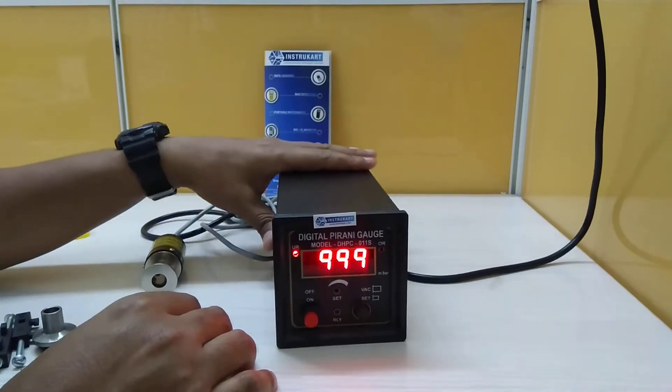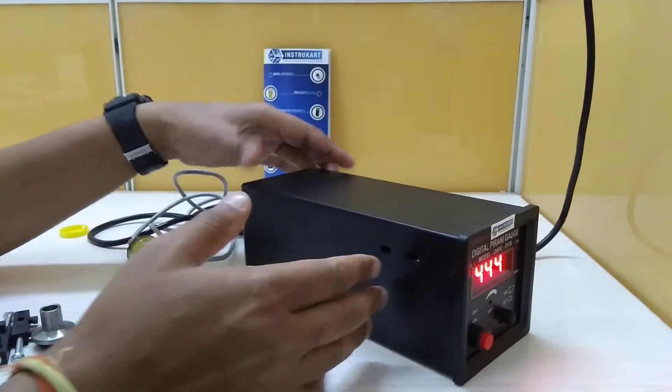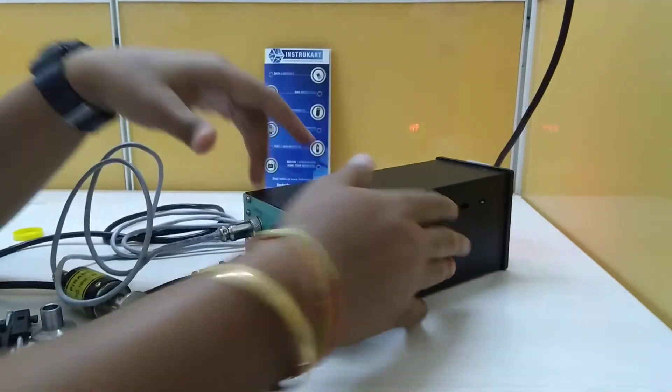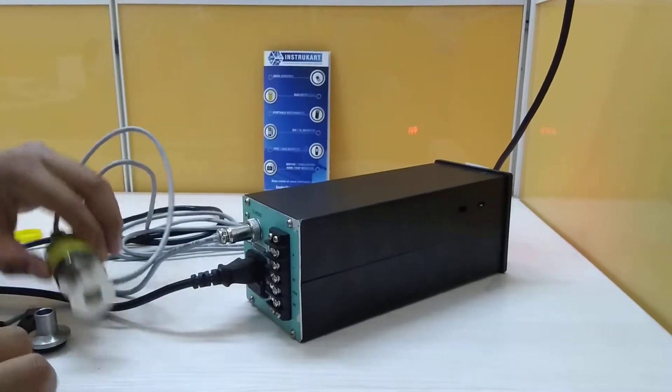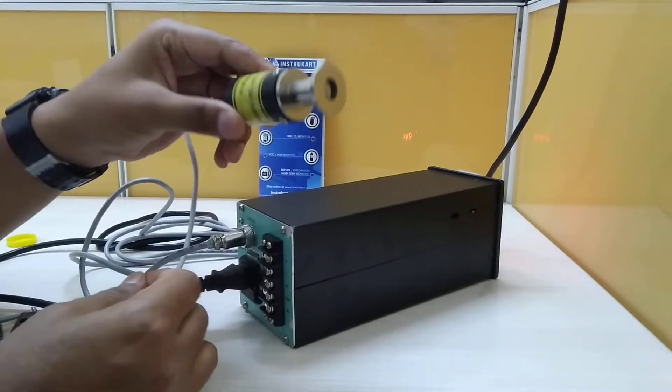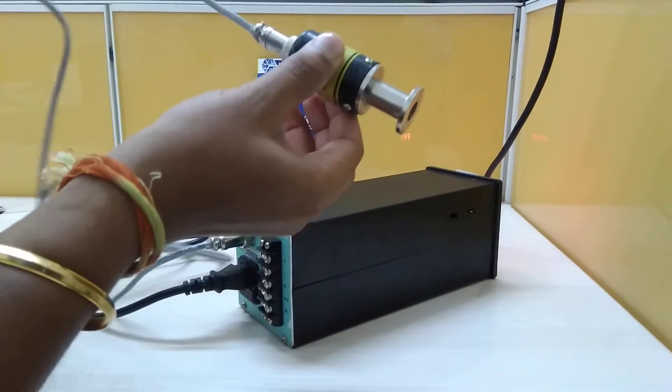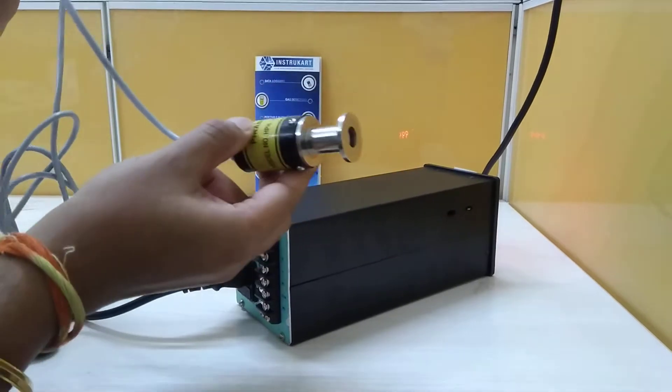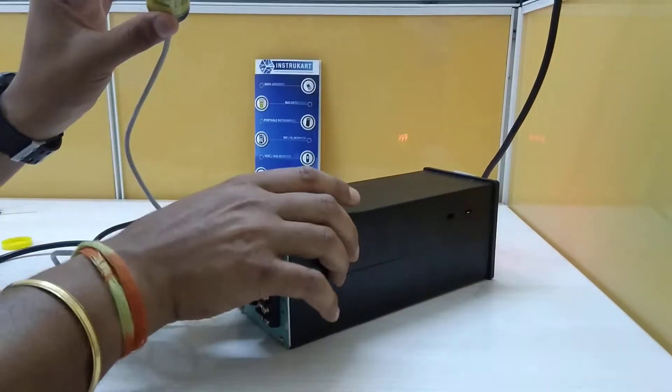Now this Pirani gauge is having the same set of sensors and the clamps which we use for the other models. This is the gauge head basically. As you can see,